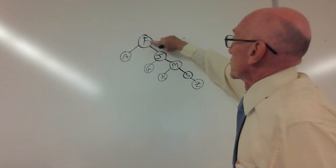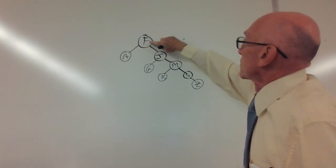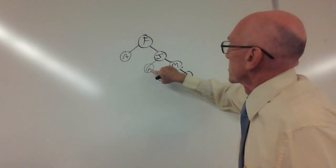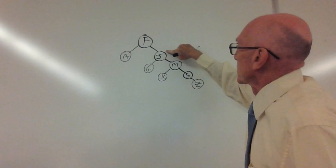There are right children for F, and we want to find the smallest right child, which is G. That comes next, moving up to the parent, which is J.